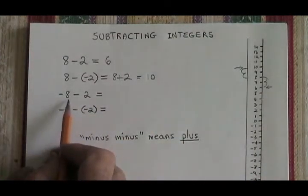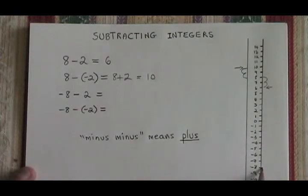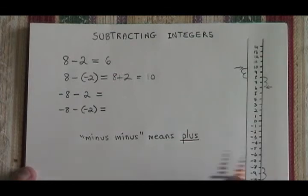The third question, negative 8 minus 2. We're starting at negative 8 and we're going down by 2 because it is a subtraction. 1, 2. The answer is negative 10.